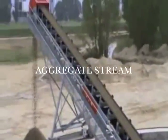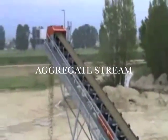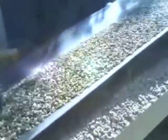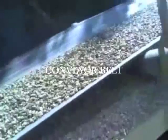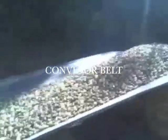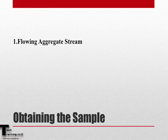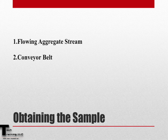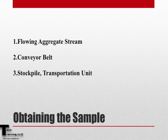There are many locations from where a sample might be obtained, but the four primary locations include a flowing aggregate stream, a conveyor belt, a stockpile or transportation unit, and a roadway from the base or the subbase.